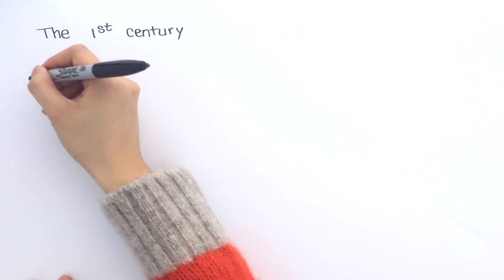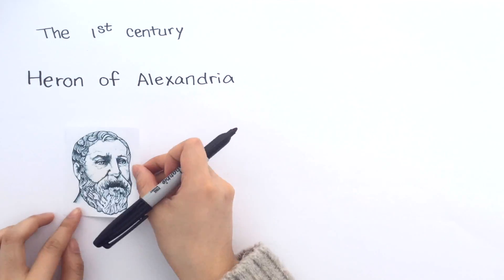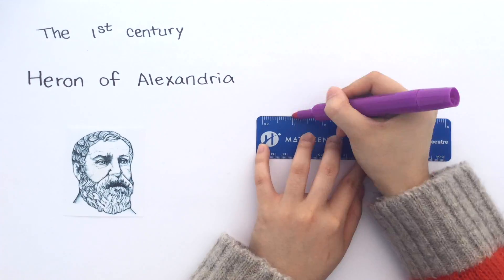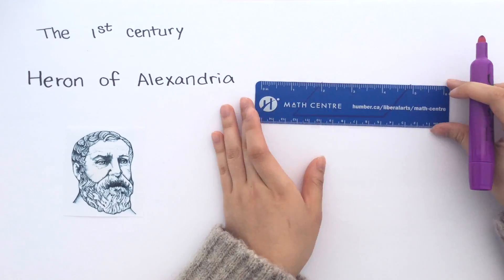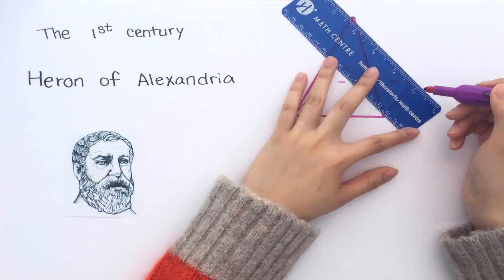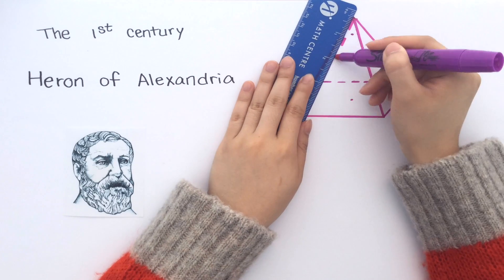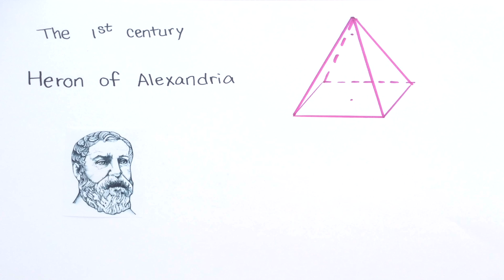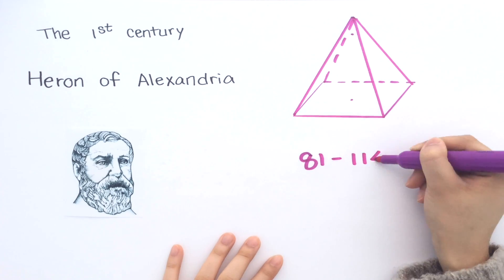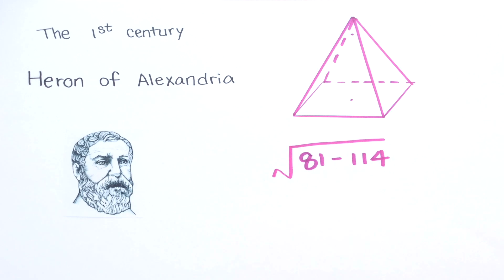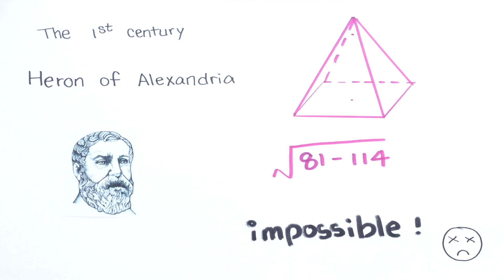The very first mention of trying to solve this dates all the way back to the first century. In 50 AD, the Greek mathematician Heron of Alexandria studied the volume of a pyramid. In its solution, he found that he had to take square root of 81 minus 114. He deemed this impossible and discarded the problem.